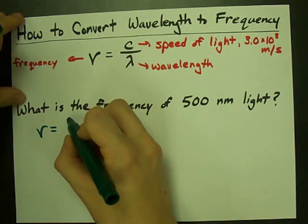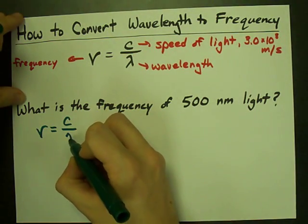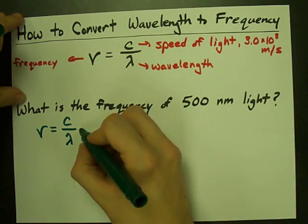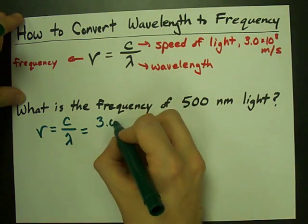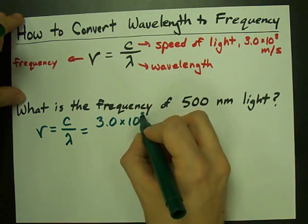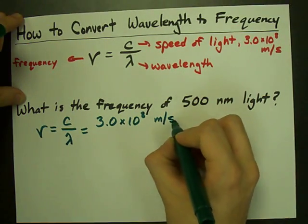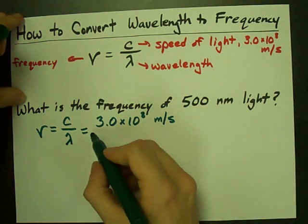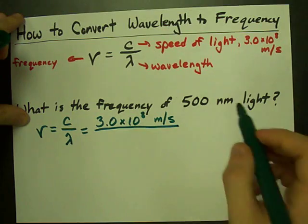Well, the frequency is the speed of light divided by the wavelength. The speed of light is 3.0 times 10 to the power of 8 meters per second, and the wavelength here is 500 nanometers.